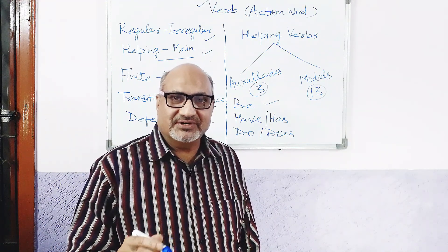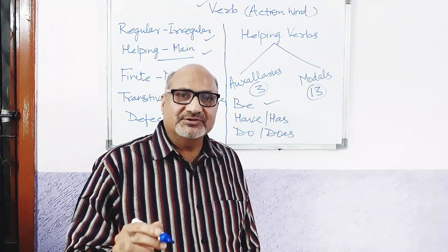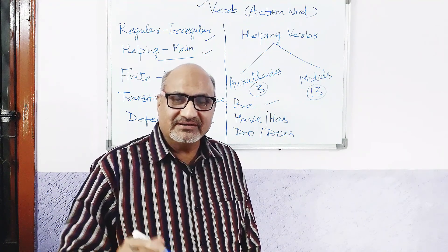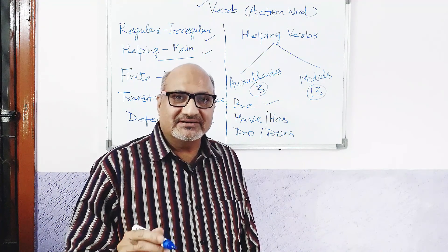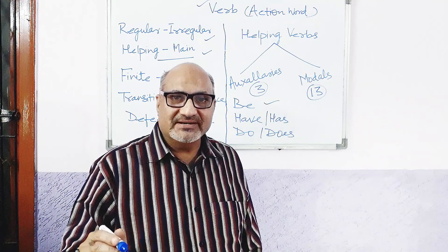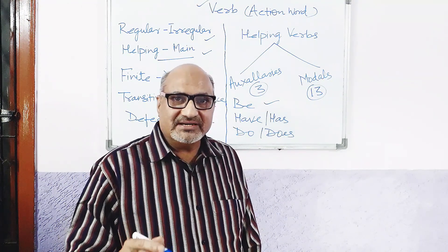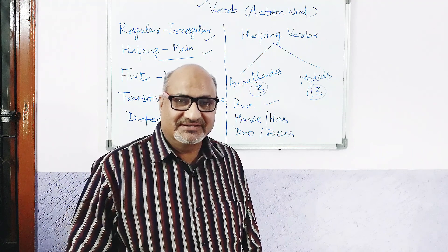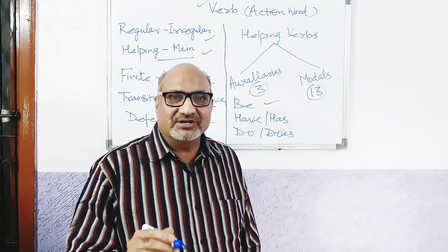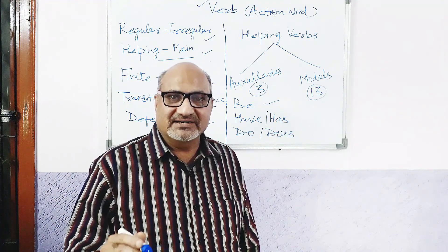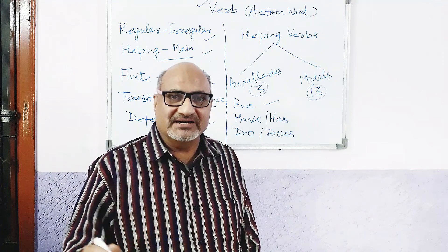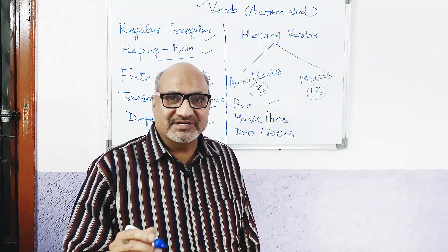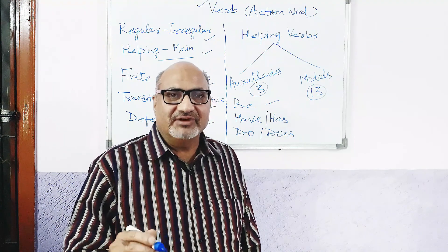Be is used for formation of sentences as per future continuous tense: 'He will be going there tomorrow.' Passive voice: 'A letter will be written by him.' Being — used for passive formation: 'A letter is being written by him,' 'A letter was being written by him.' In addition, 'being' is also used as part of a phrase: 'Being sincere, he went to school yesterday.' 'Been' is used for perfect continuous part of any tense: 'He has been writing a letter,' 'He had been writing a letter,' 'He will have been writing a letter.' 'Been' is also used for passive formation: 'A letter has been written by him,' 'A letter had been written by him,' 'A letter will have been written by him.'